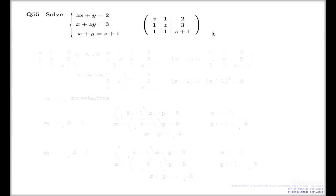Just by changing the way I treat my number Z into a parameter rather than an unknown, I change my view from three equations with three unknowns to three linear equations with two unknowns. Such a combination does not always have a solution, and that's why I can use Gaussian elimination or the determinant method to see for which values of Z my augmented matrix will not have a pivot on the right-hand side.